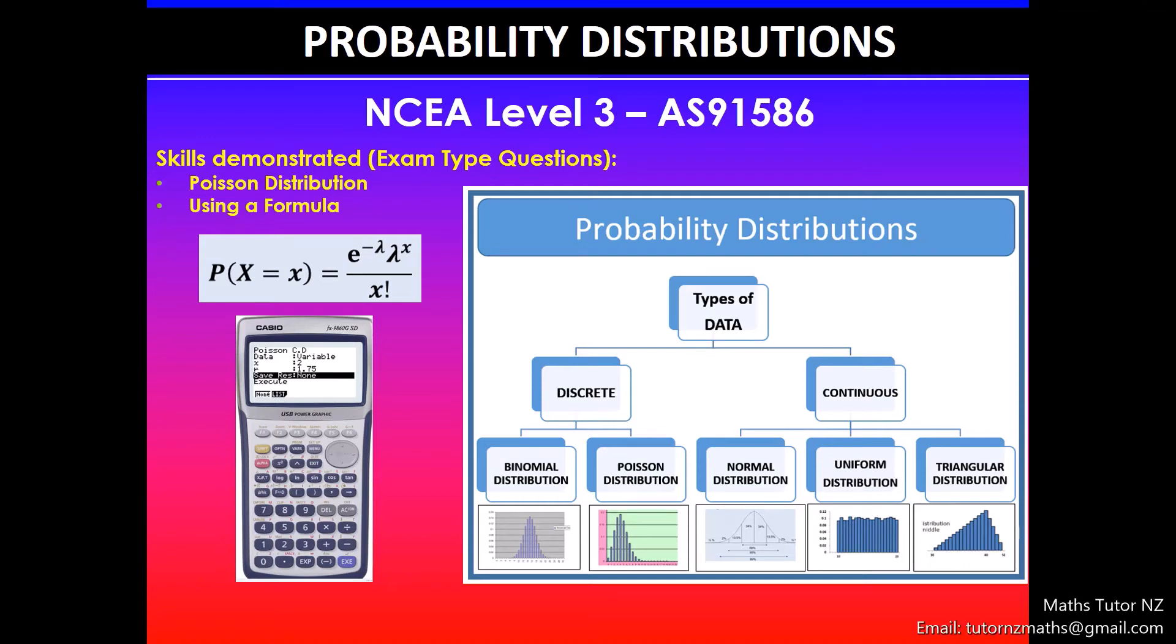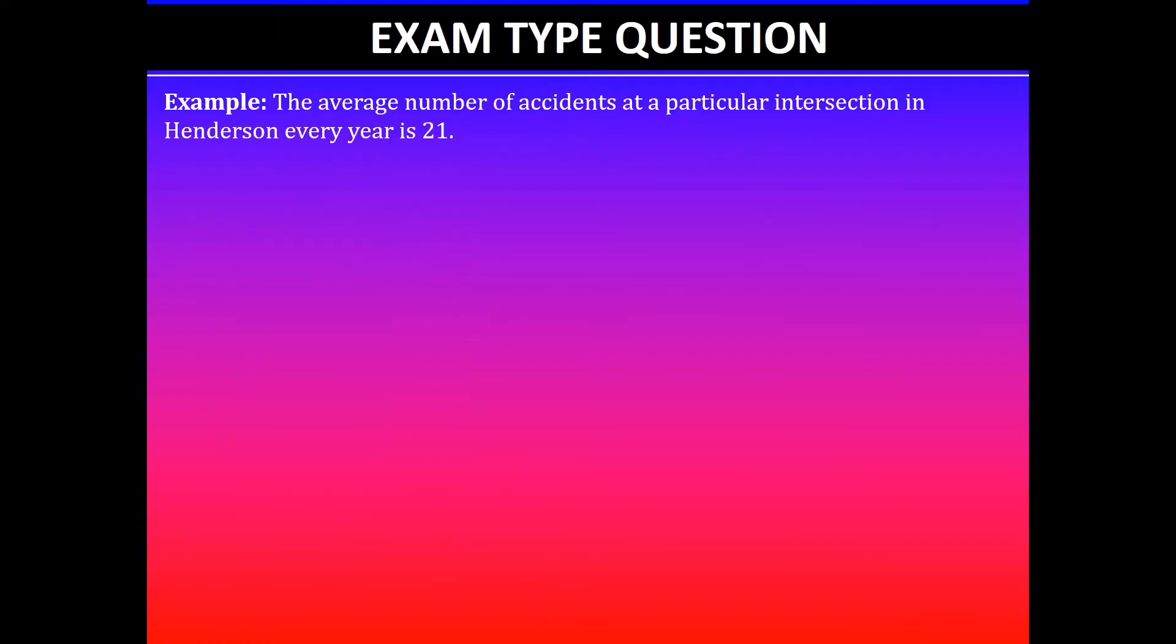Greetings everyone. In this video we'll be looking at NCEA Level 3 probability distributions achievement standard. In this video I will focus on using a Poisson distribution formula to find unknown probabilities.